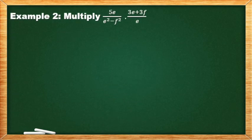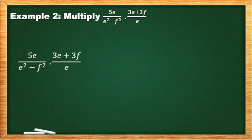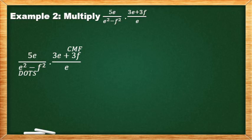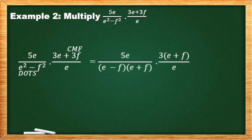Example number 2: Multiply 5e/(e²−f²) times (3e+3f)/e. Dito, gagamitin natin lahat yung mga pinag-aralan natin last time. Sa 3e+3f, we can use CMF — common monomial factor. So, factored out natin yung 3 kasi 3 is their common factor. Sa e²−f² naman, yun yung dots — difference of two squares. Why? Difference means minus, of two perfect squares. e² is a perfect square, f² is a perfect square.